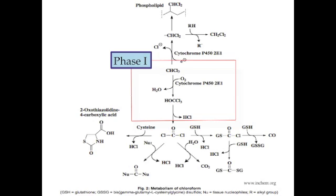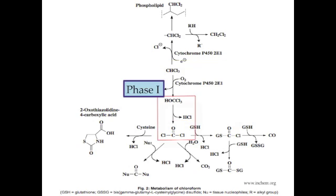Oxidative metabolism depends mainly on cytochrome P450-2E1 for the oxidation of chloroform to trichloromethanol. Trichloromethanol then spontaneously undergoes a phase 1 dehydrochlorination reaction to form phosgene.